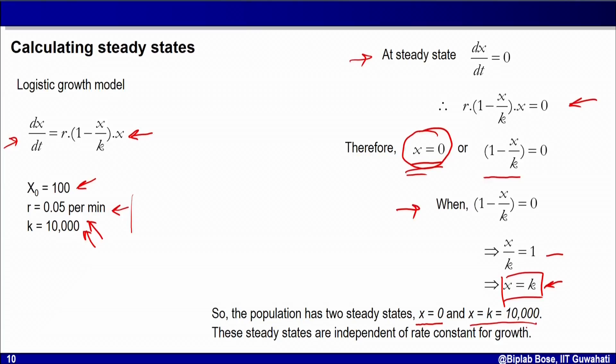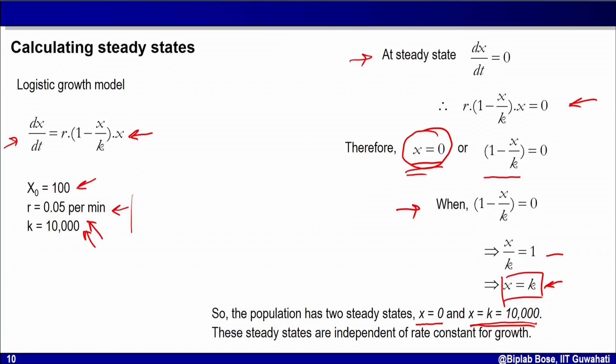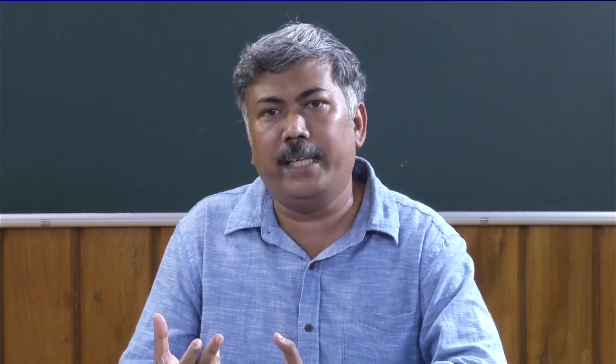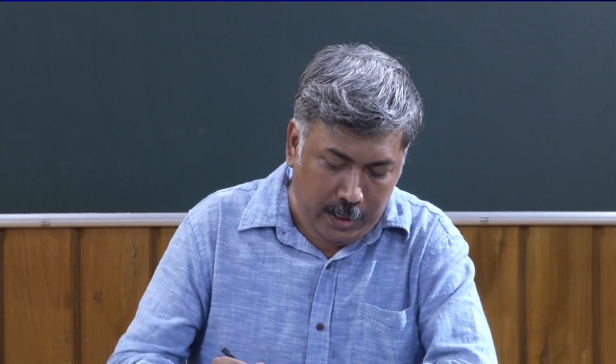If your population is already at 0 — x equal to 0 — the population will remain like that. That makes sense: if you do not have the organism, what will grow? If your population is at carrying capacity, that is 10,000, that is another steady state — if you have already reached the carrying capacity there will be no further growth. So this system has two steady states, and using simple algebraic separation we can find the values of x for which we have steady states. Notice one interesting thing: for both steady states there is no role of the rate constant for growth r. The steady states are independent of the growth rate and only depend upon the carrying capacity.